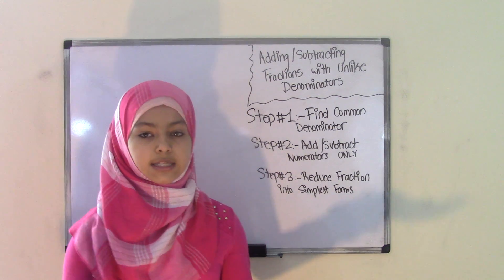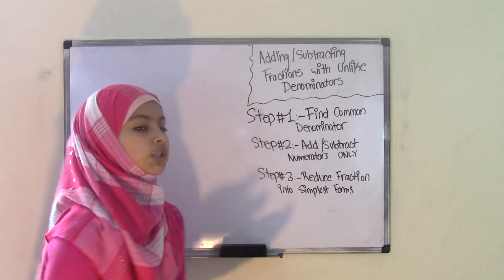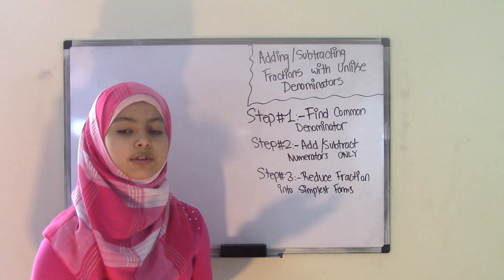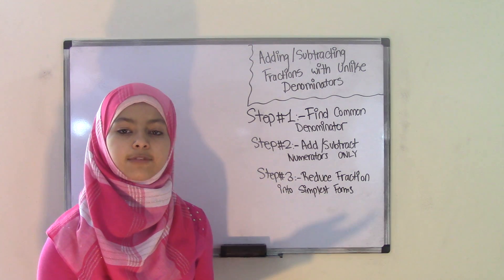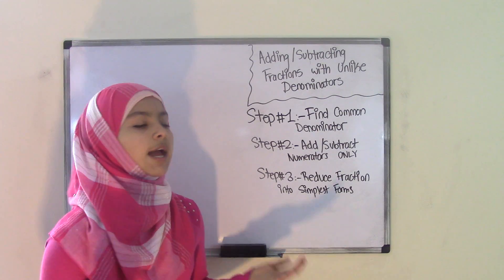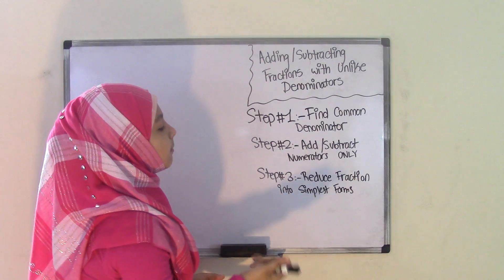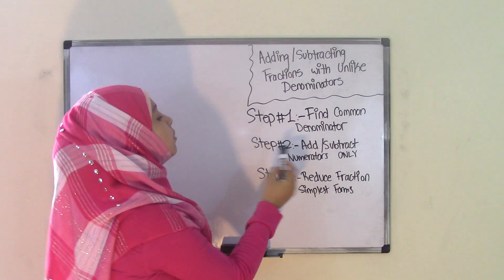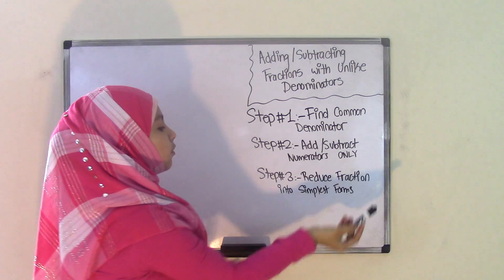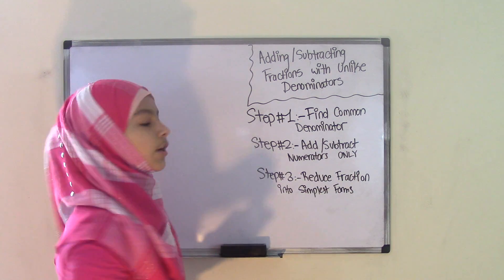So I'm going to be teaching you guys how to add fractions with unlike denominators and then subtract fractions with unlike denominators. The steps are the same for each, except that step two is either going to be add or subtract the numerators only.